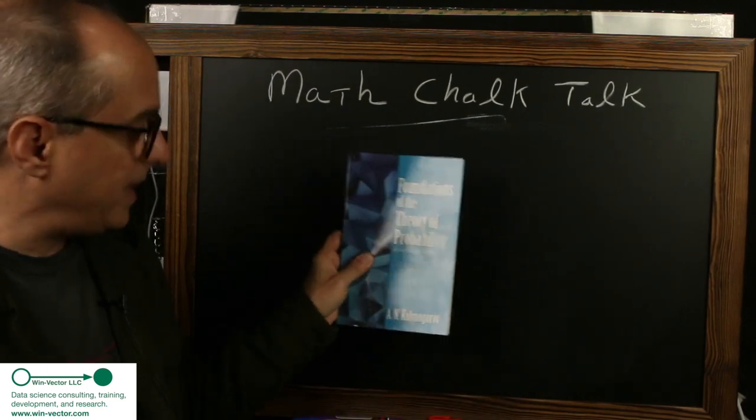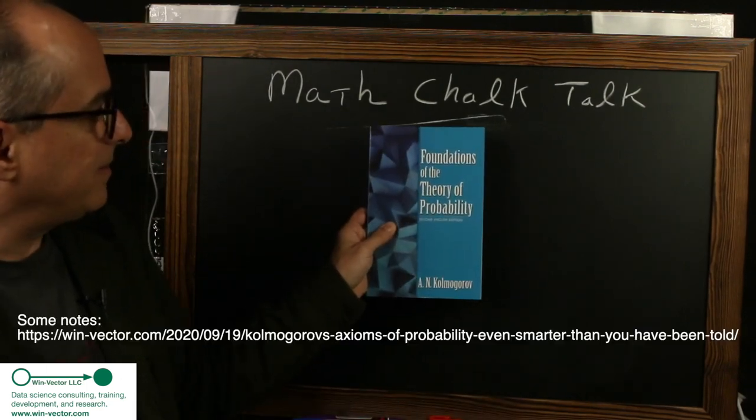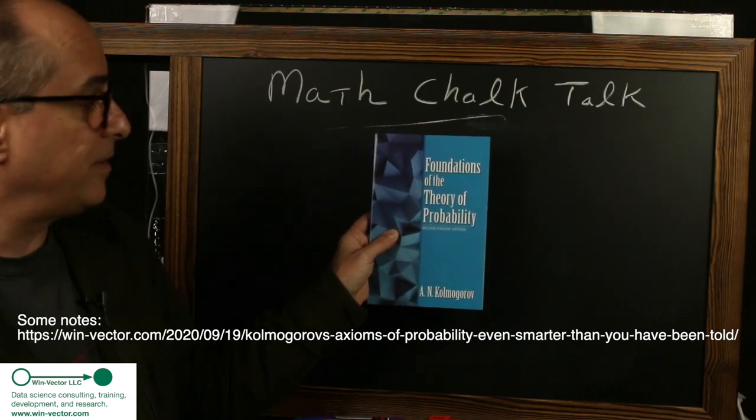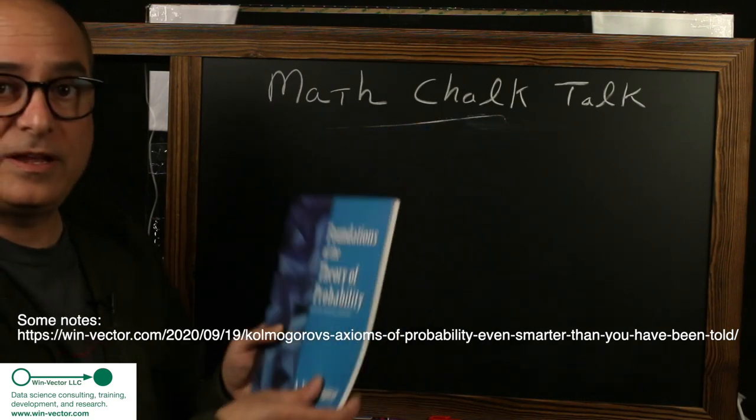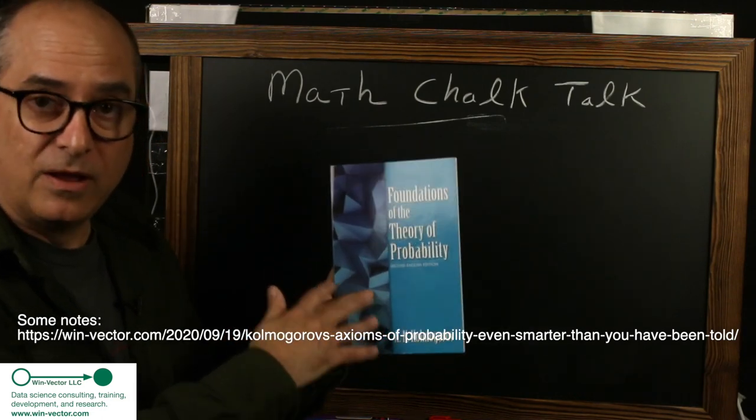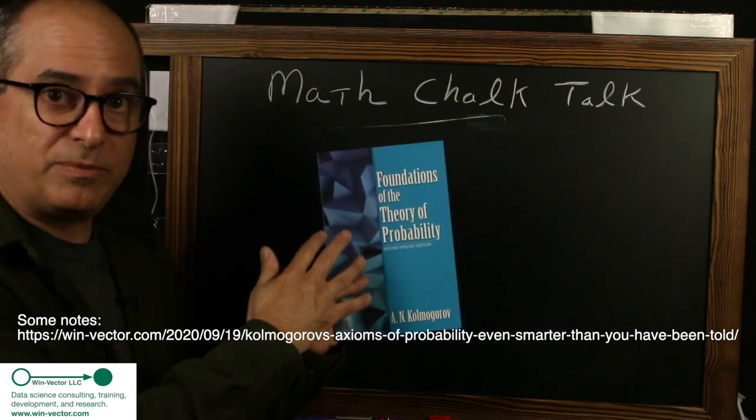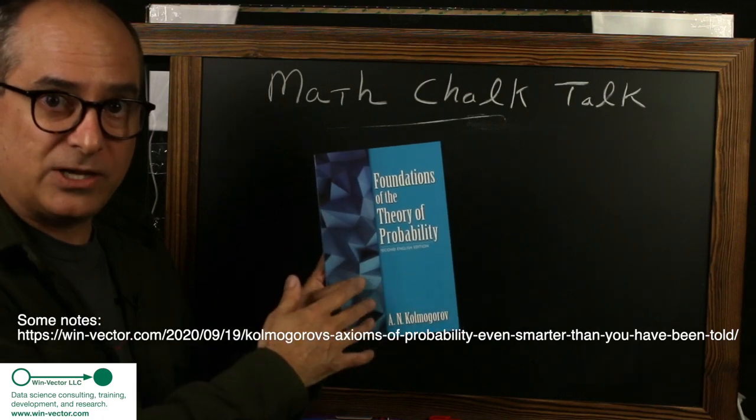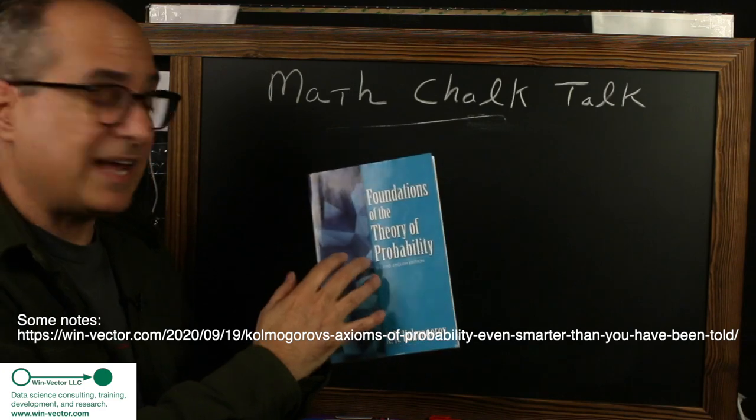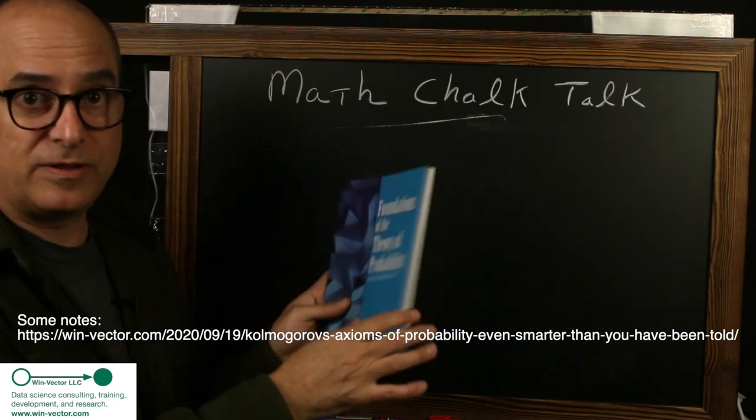Basically, in the way it was defined or axiomatized by Kolmogorov in 1933 with the foundations of the theory of probability. This was a germinal or watershed moment in the theory of probability. All probability theory is measured whether it's before or after this publication. Everything before had a lot of systematic problems.